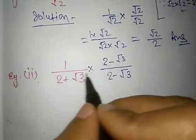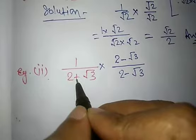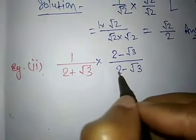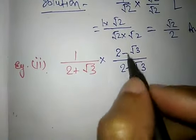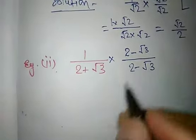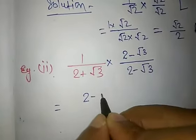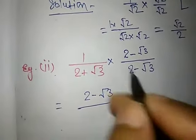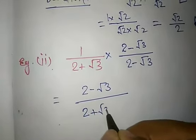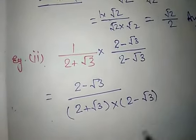As you see, we change the sign between them. Positive converts to negative, and negative converts to positive. Then multiply both numerator and denominator by the conjugate. We multiply by 2 minus root 3 over 2 minus root 3.